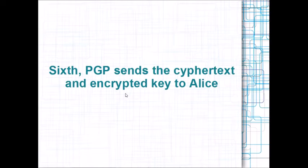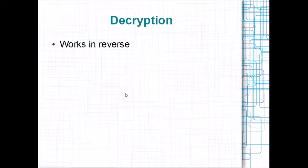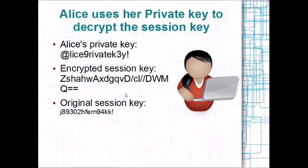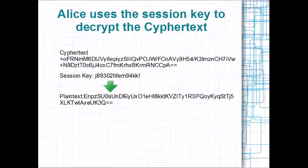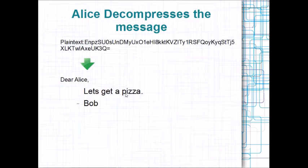That leads us to the sixth step, which is to send the ciphertext and the encrypted key to Alice. Decryption works in reverse: Alice will use her private key to decrypt the encrypted session key to get the original session key. Then, using that session key, she'll decrypt the ciphertext to get the plaintext. She'll decompress the plaintext and there she has her message.